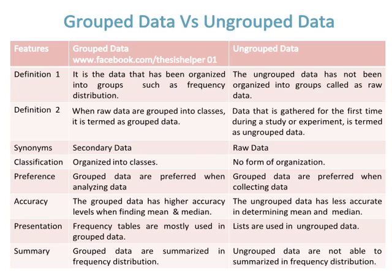A second definition: when raw data are grouped into classes, it is termed grouped data. Data that is gathered for the first time during a study or experiment is termed ungrouped data. A synonym for grouped data is secondary data, while a synonym for ungrouped data is raw data.